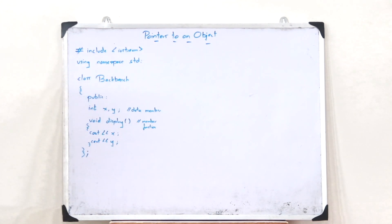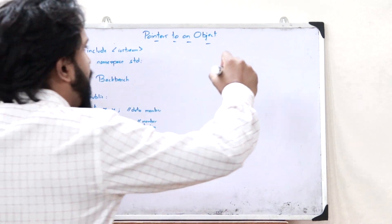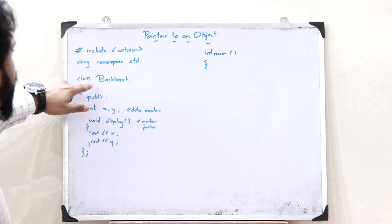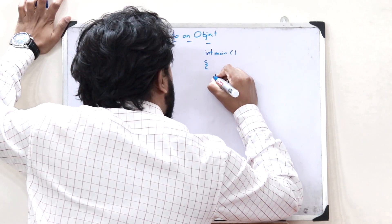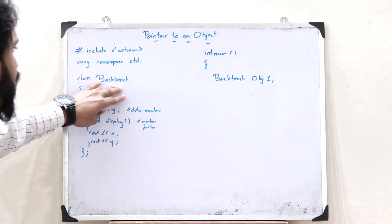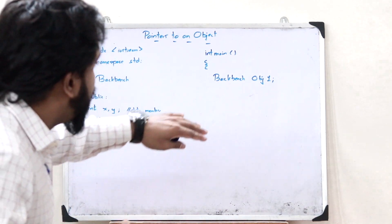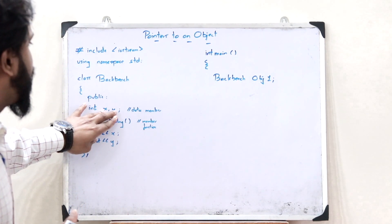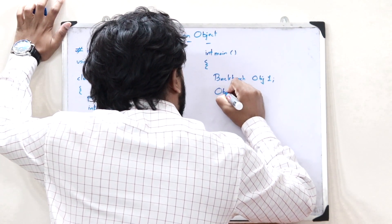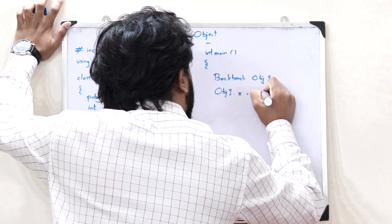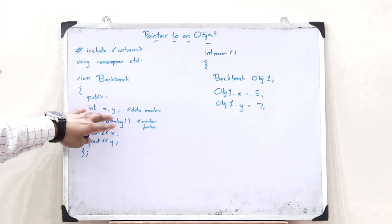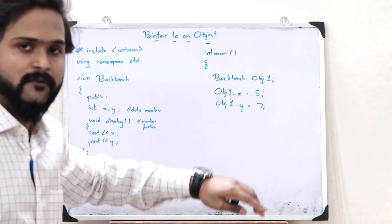Let us assume this particular class Backbench. Now, let us open the main loop. Inside the main loop, let me declare or create an object of this particular class Backbench — Backbench OBJ1. This OBJ1 is an object of this particular class Backbench, so OBJ1 will have these two data members X and Y. Let me give the values of X and Y using the dot operator: OBJ1.X = 5 and OBJ1.Y = 7. So inside OBJ1, the values of X and Y are 5 and 7 respectively.